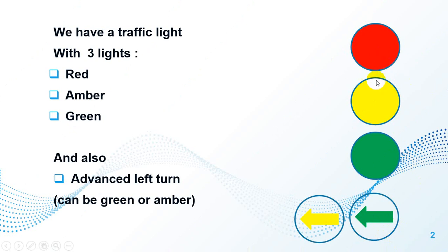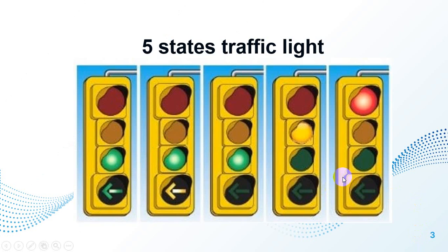Our traffic lights have three lights: red, amber, green, and also an advanced left turn. The advanced left turn can be amber and green, so we have a traffic light with five states as you can see in the picture.